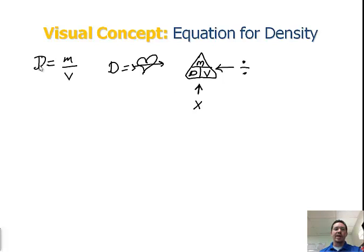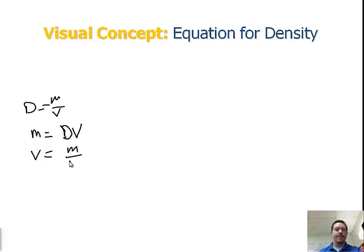I could also look at this original formula, density equals mass divided by volume. And if I wanted to solve for mass, I could multiply both sides by V. So mass could equal density times volume. Or my other possibility is volume is equal to mass divided by density.